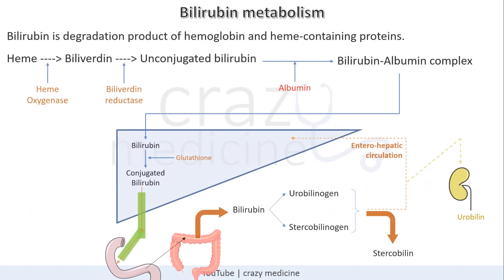This is the basic bilirubin metabolism that we studied in the last video. We will now see in detail what happens inside the hepatocyte — how bilirubin is conjugated and carried to bile. This concept is important for understanding congenital hyperbilirubinemia.